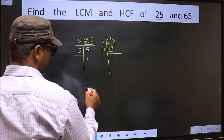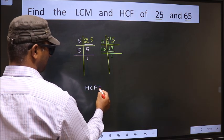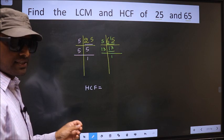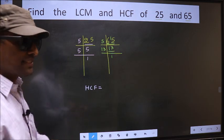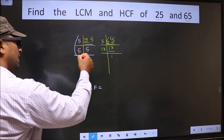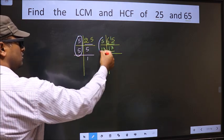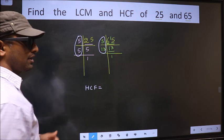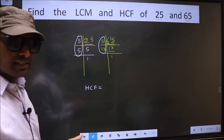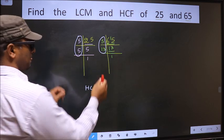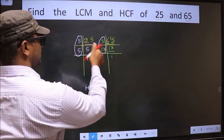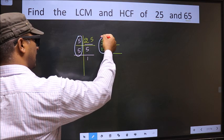So now our HCF is, HCF is the product of numbers which should be present over here and also here. I repeat, HCF is the product of numbers which should be present in these two places, here and here.